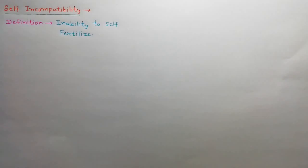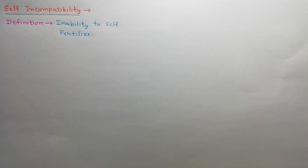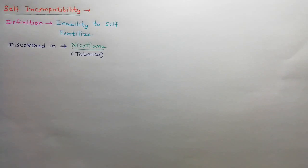In this topic, we will discuss about self incompatibility in plants. Certain plants recognize and reject their own pollen grains, thus forcing outbreeding. It is defined as the inability of the crop plant to fertilize, produce embryo and seeds upon self-pollination, or inability of a fertile hermaphrodite seed plant to produce zygotes after self-pollination. Nicotiana (tobacco) was one of the first plants in which self incompatibility was noticed.